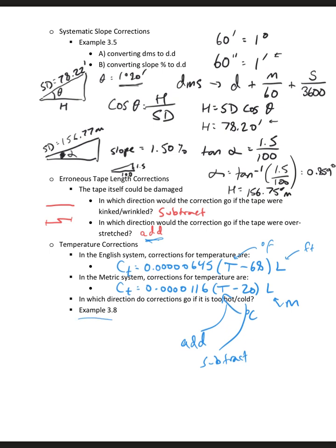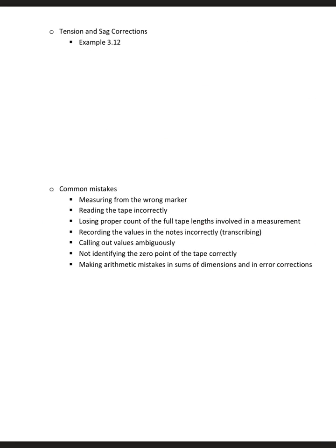There's an example in your book. I'm not going to go through it right now in this video, but you should look at the example to see how those corrections are accounted for. And then we've got tension and sag corrections. The formula for sag, this is again when the tape is not fully supported by the ground, we have the sag correction.